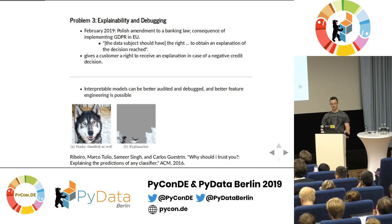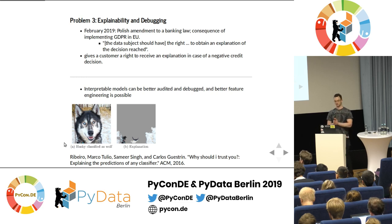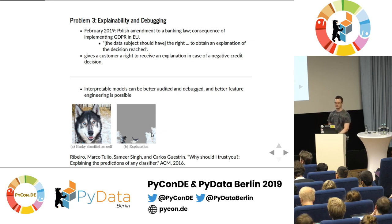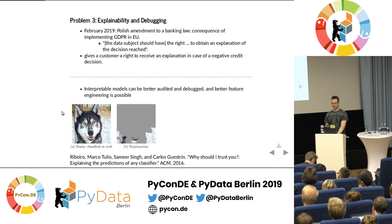Related to that is the idea of debugging your model — you can only debug it if you understand it. If you have a non-interpretable model and it gives you a wrong classification, you usually don't know what's going on. There was a classification problem from a paper: husky versus wolf, just two classes. A husky was wrongly classified as a wolf. Looking at the explanation, the pixels the model concentrated on were the snow in the background — the model didn't care what the dog looked like, but saw snow and thought it was a wolf. The solution was to get more training data, specifically huskies with snow in the background.